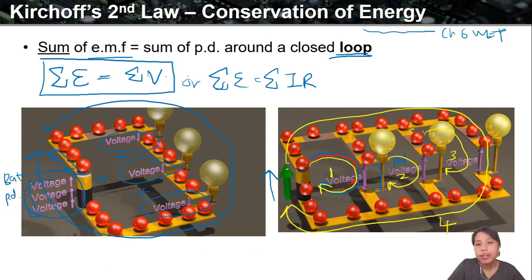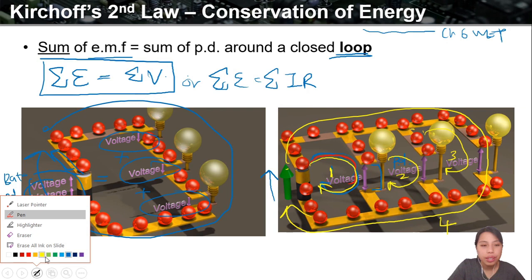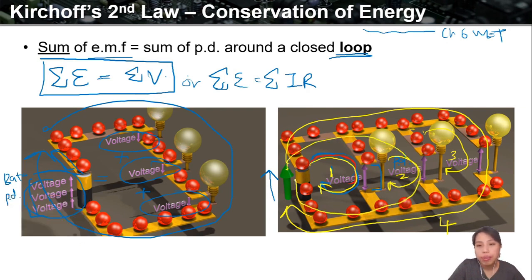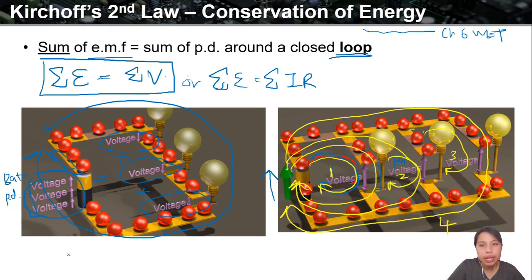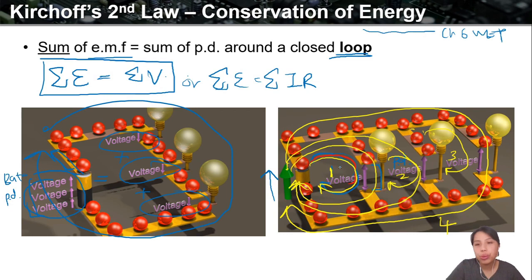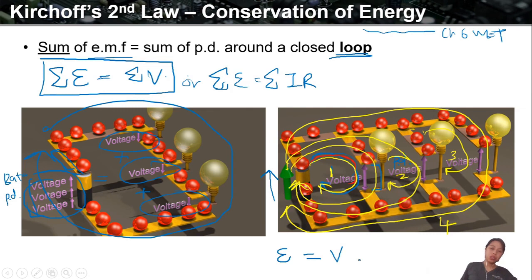No matter which light bulb you go through, which loop you take from the battery side, you have some EMF E — that's the only battery in the circuit. It goes to the potential drop across any of these light bulbs, which is just V. So my equation is very short with just one component. We'll see more with more components later.